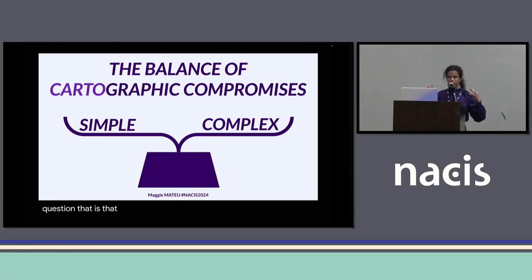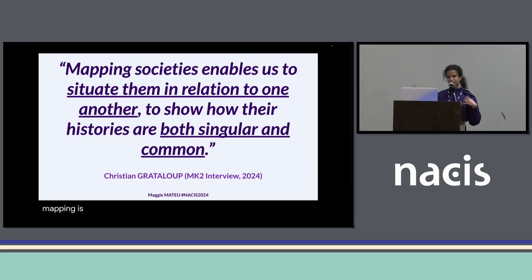There's a balance we have to make and do cartographic compromises between showing simple things, but complex enough to not hide the reality underneath it. The main purpose of mapping, as Christian Gratalou says, is that mapping societies enables us to situate them in relation to one another, to show how their histories are both singular and common.